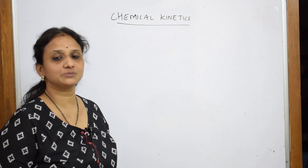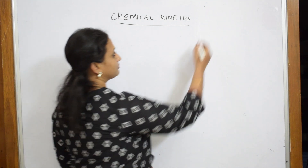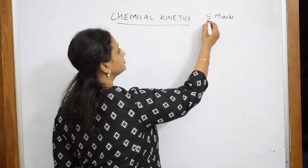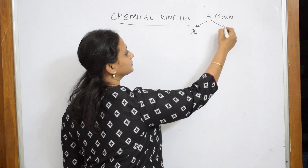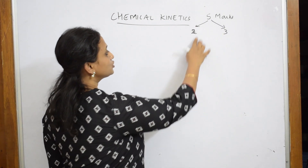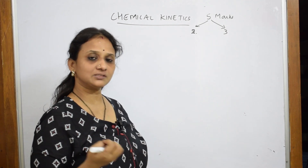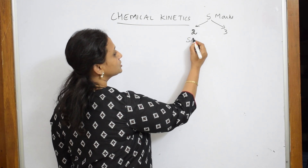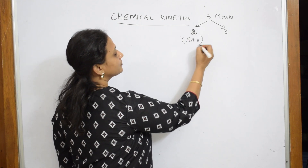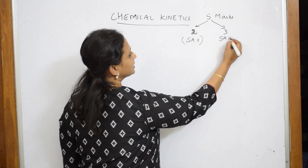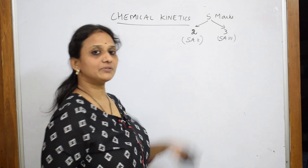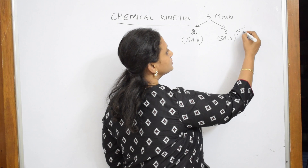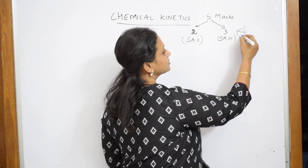According to last year's blueprint, this chapter carries five marks — bifurcated into two marks and three marks. The two marks come under short answer type two, and the three marks come under short answer type three. The three-mark question will either be one numerical or subdivided into parts covering equations.